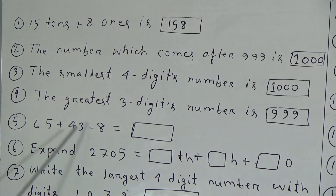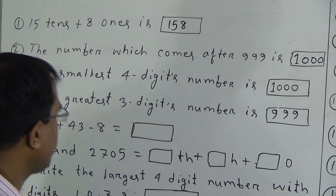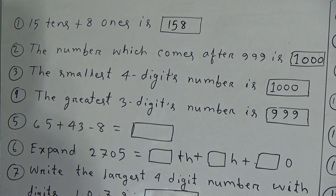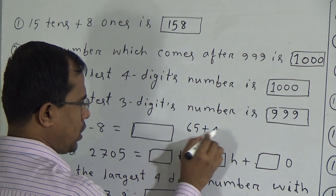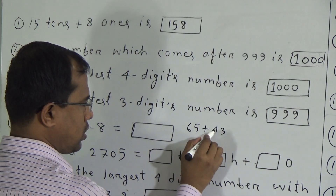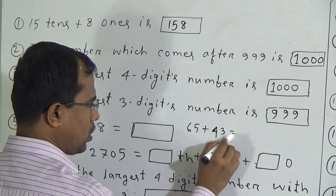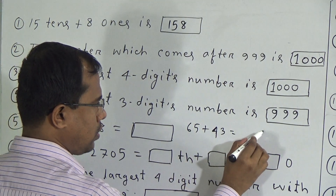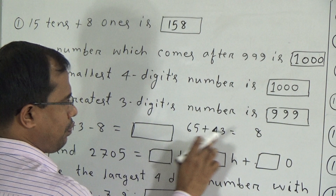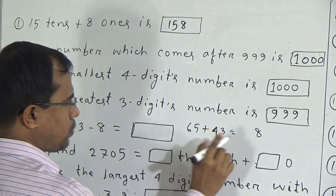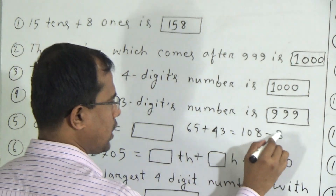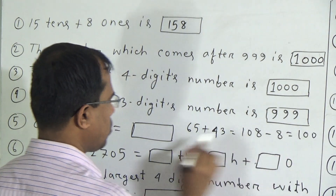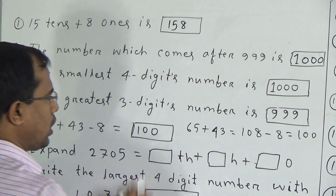Fifth question: 65 plus 43 minus 8 is equal to what? At first, we will add 65 with 43. 5 plus 3 is equal to 8 and 6 plus 4 is equal to 10, so 65 plus 43 is 108. Then 108 minus 8 is equal to 100. So the answer will be 100.